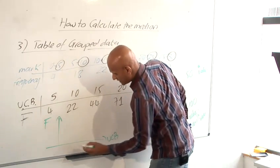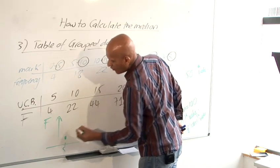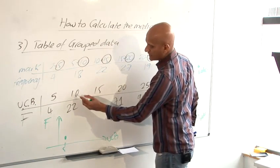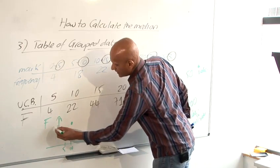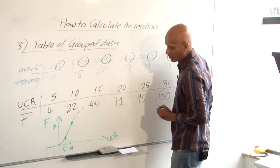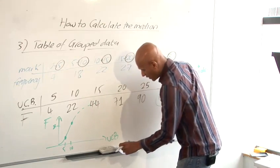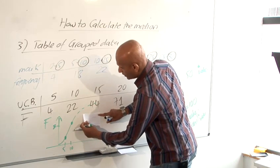So the first upper class boundary is 5, so 5, and the frequency would be 4. The next one is 10 and 22, so 10 and 22, and so on. And in that way, we're going to connect those points together to form a curve. And I've done one for this data already here to show you what that curve would look like.